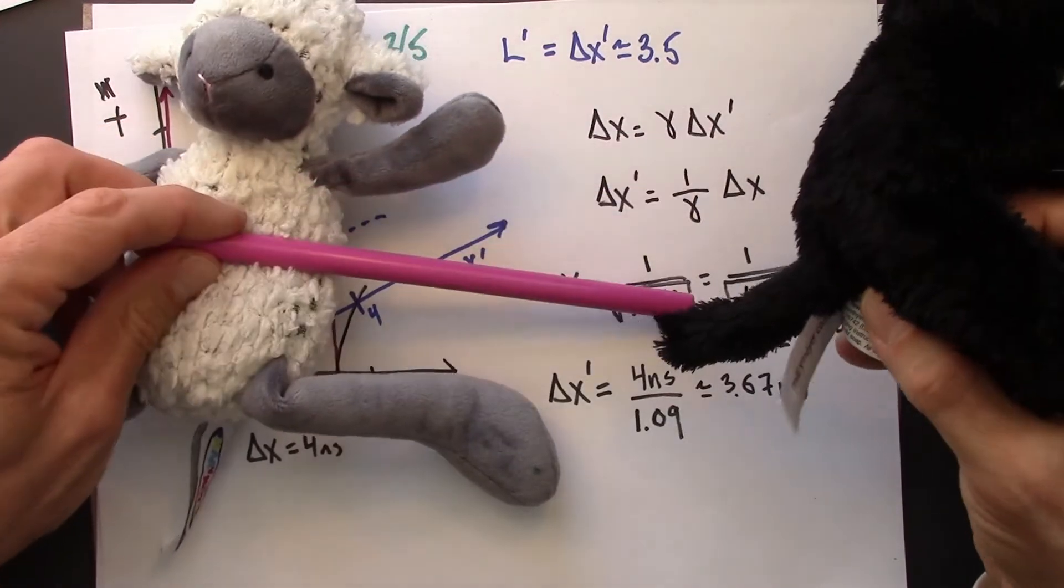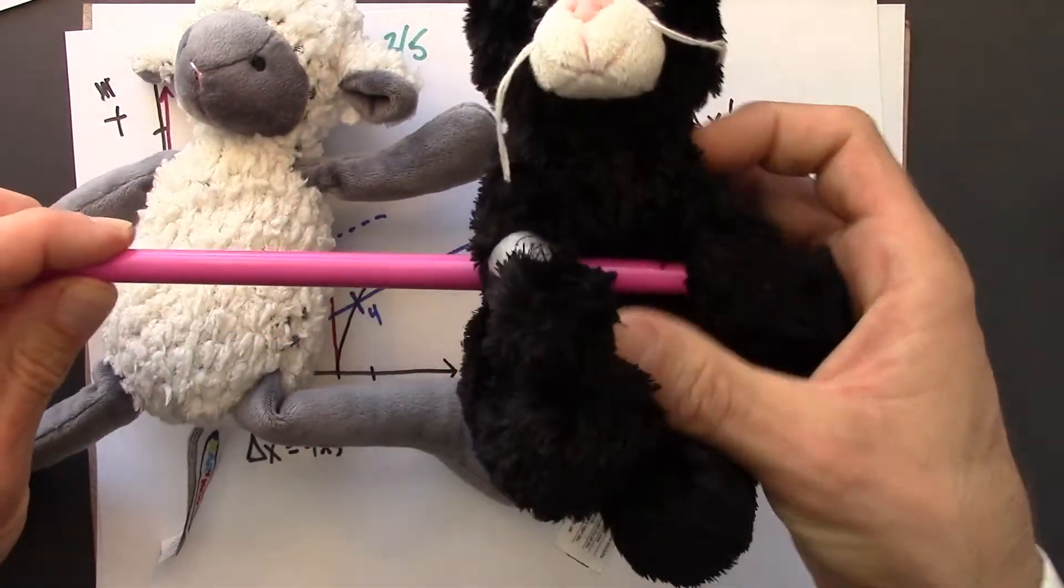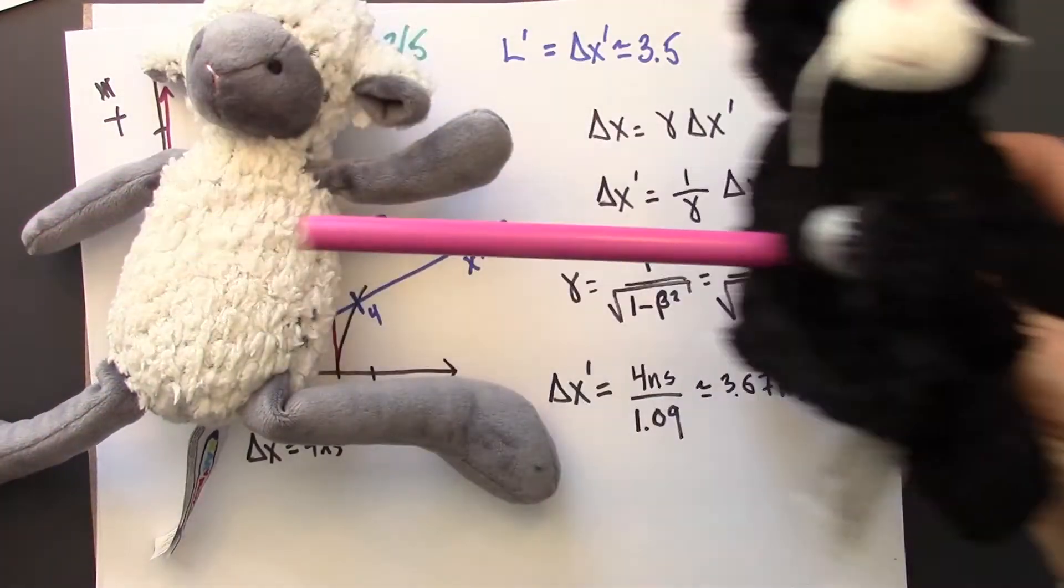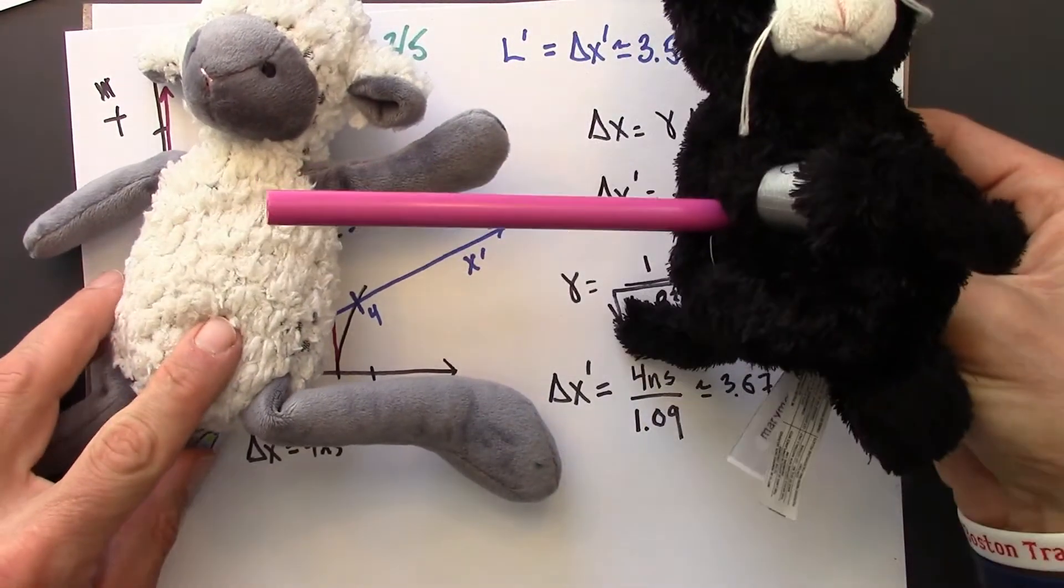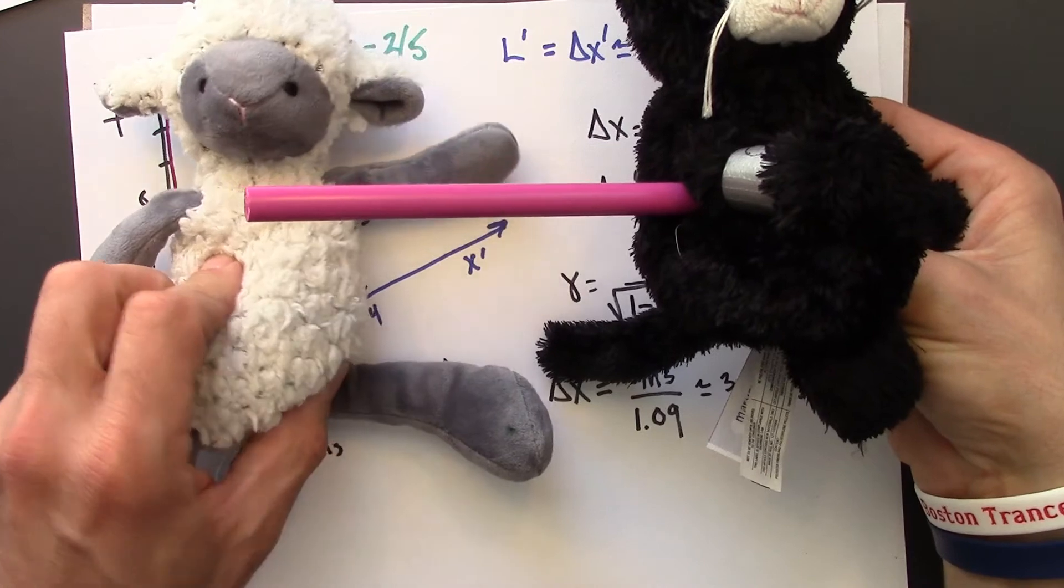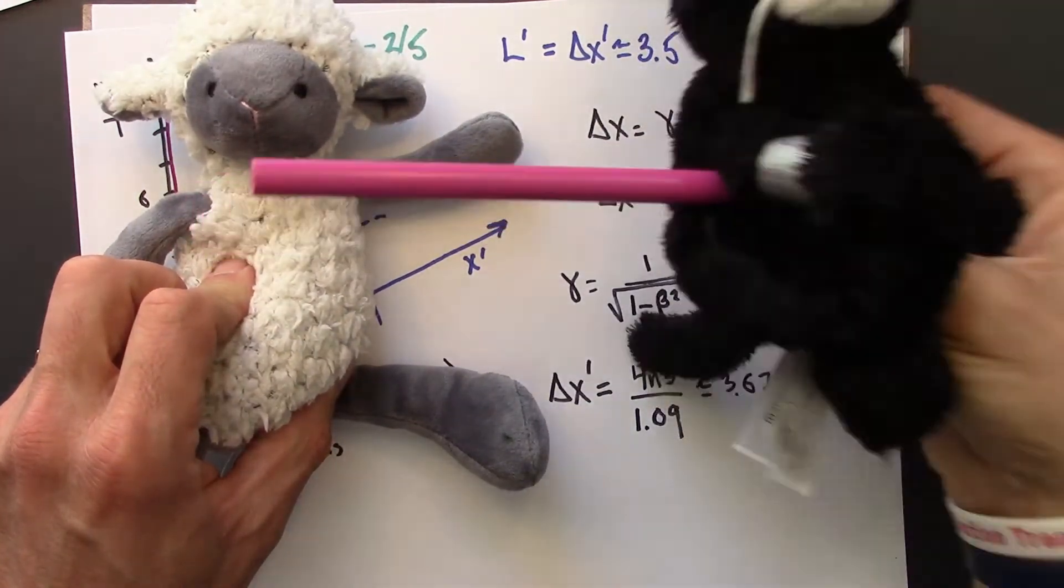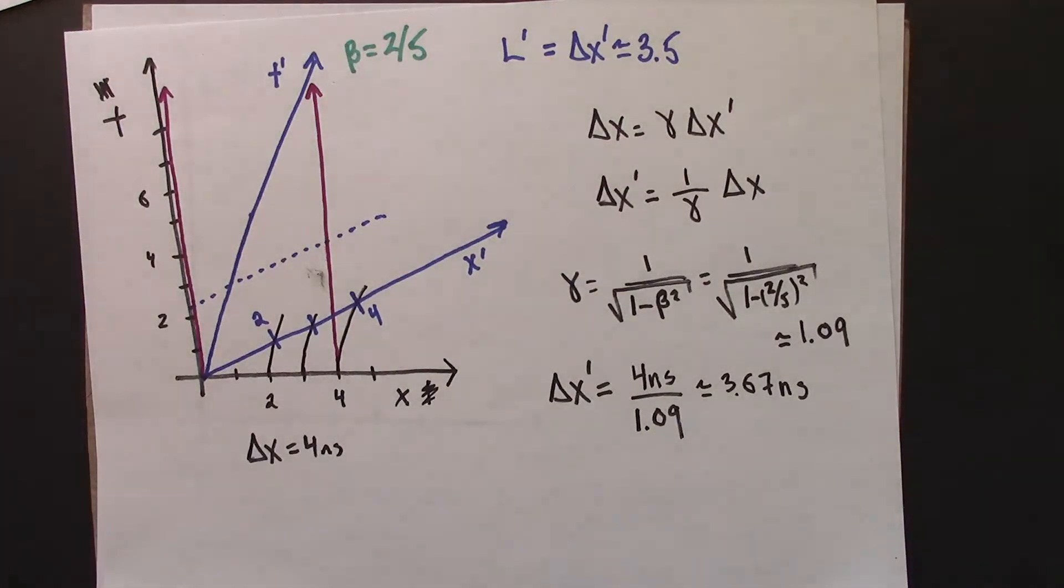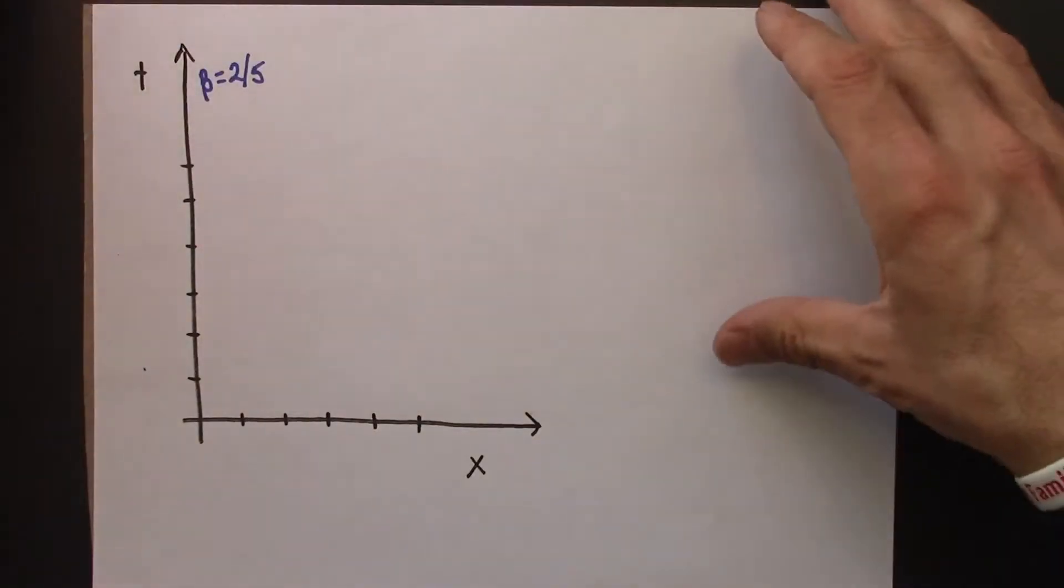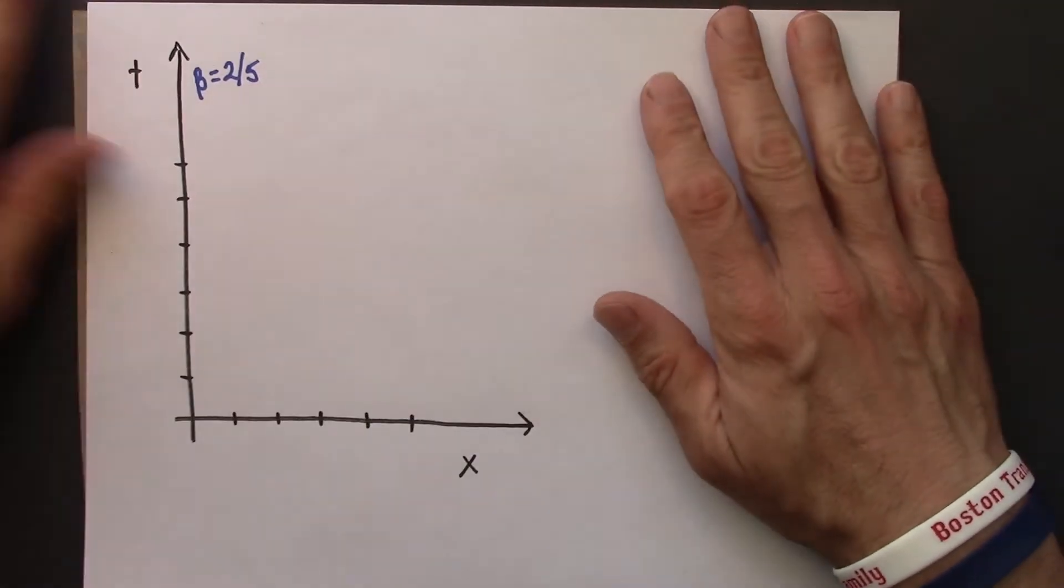So Anastasia is at rest, Beowulf takes the stick, and it's Beowulf moving again with a speed of 2 fifths, but this time he has the stick with him. And what does Anastasia think for the length of the stick that's moving? Okay, so let's construct a spacetime diagram for this situation.